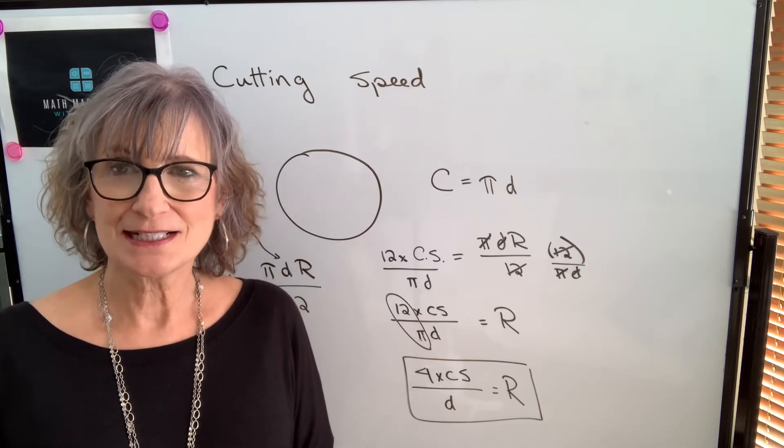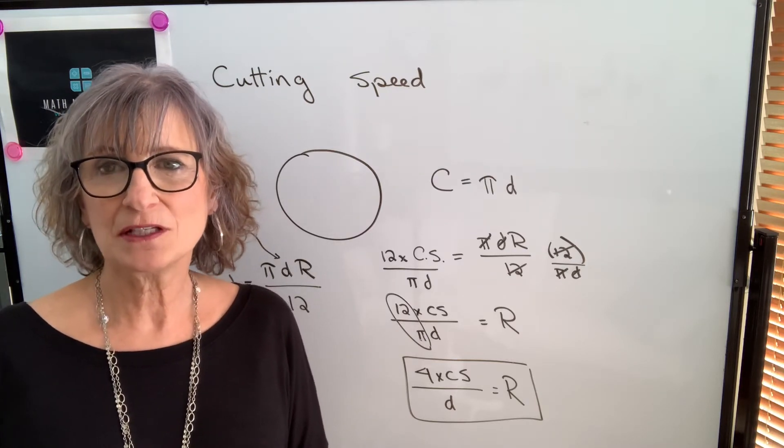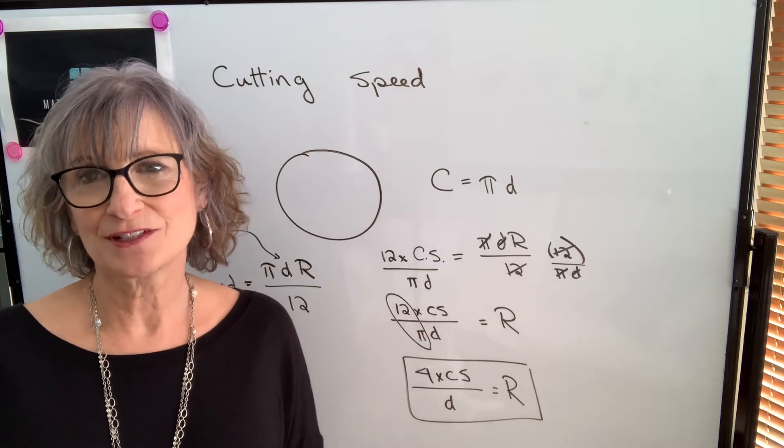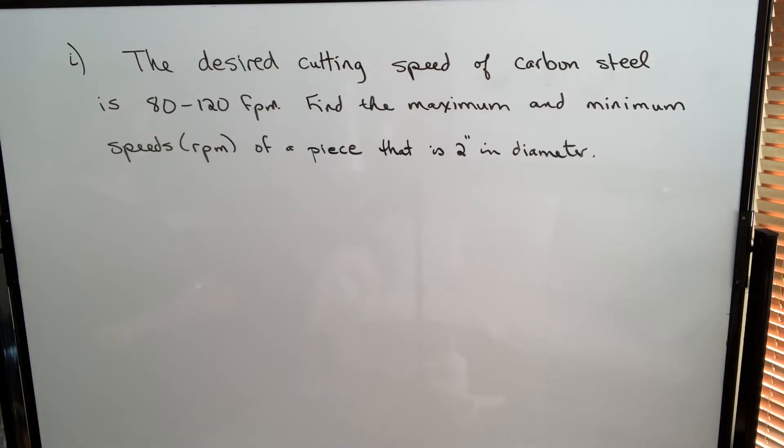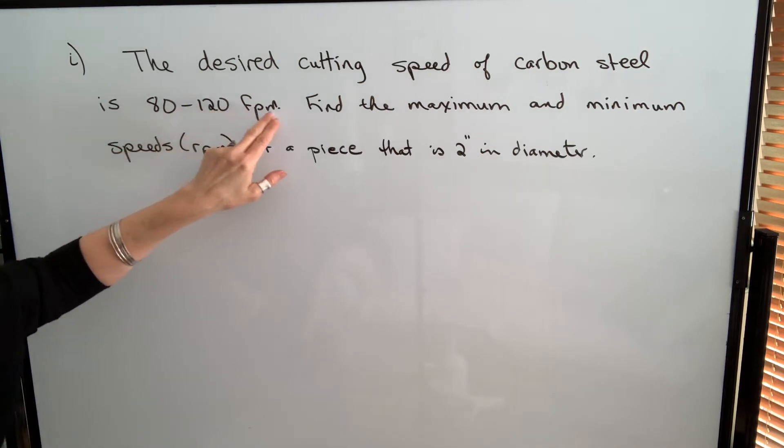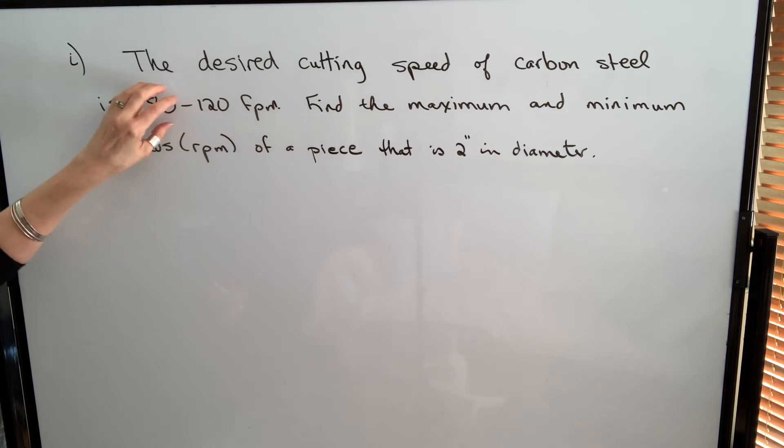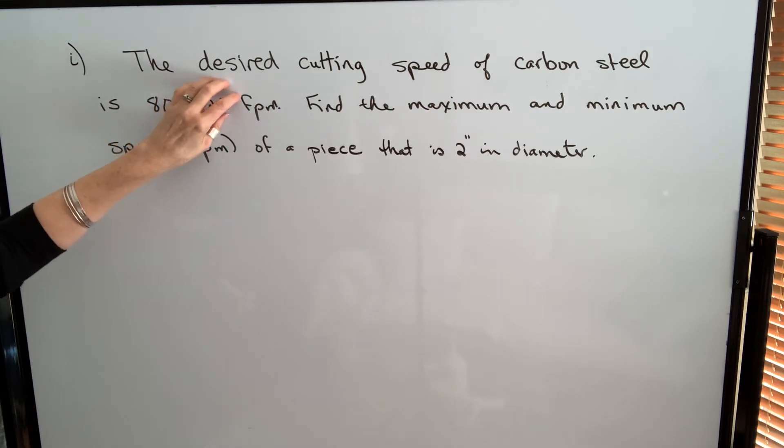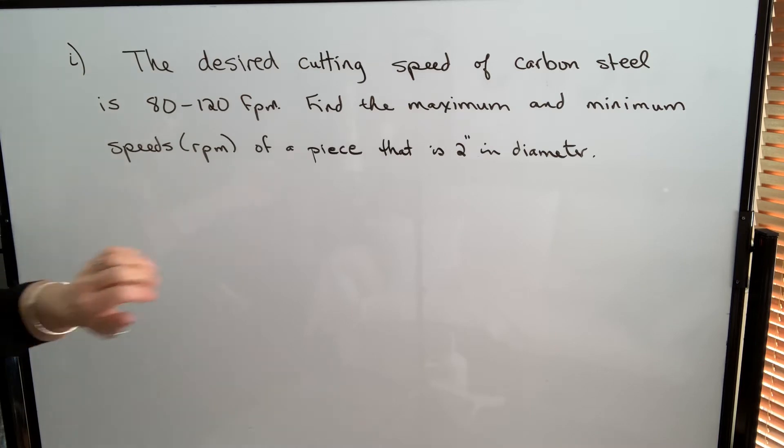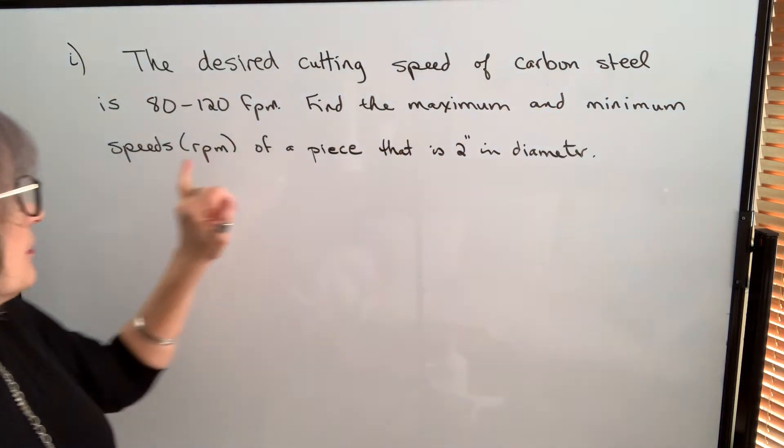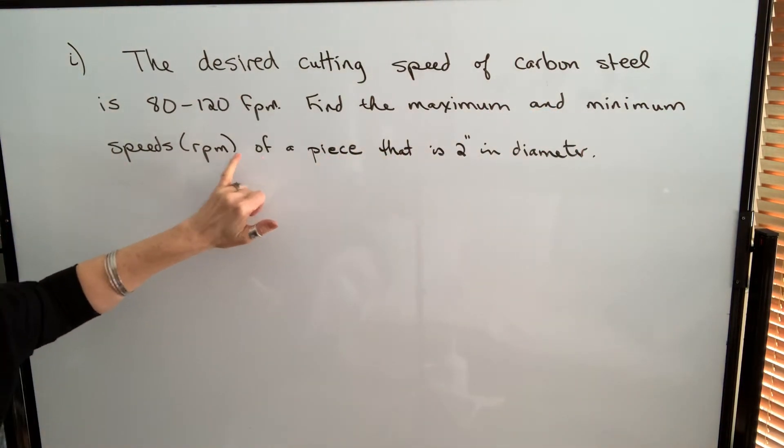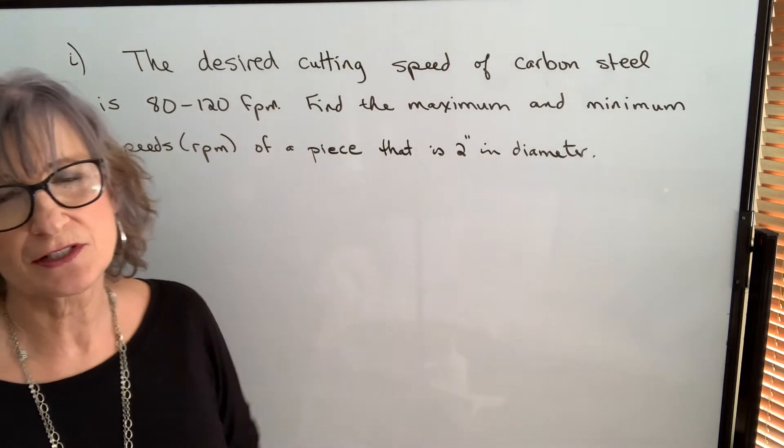Let's take a look at an example where we're finding the cutting speed using both methods, and then you can compare. The desired cutting speed of carbon steel is between 80 and 120 feet per minute. Find the maximum and minimum speeds in RPM of a piece that is 2 inches in diameter.